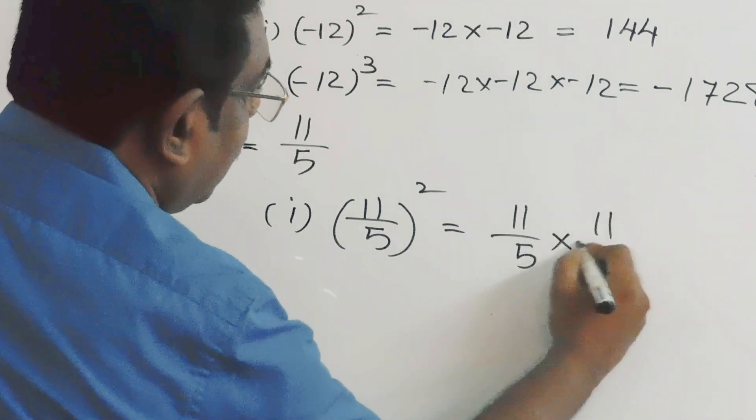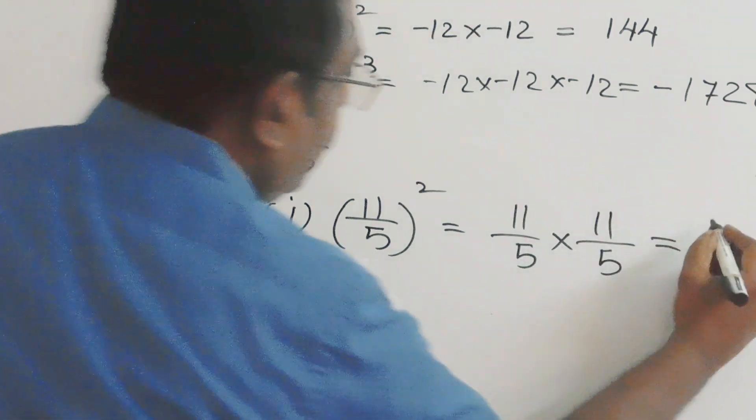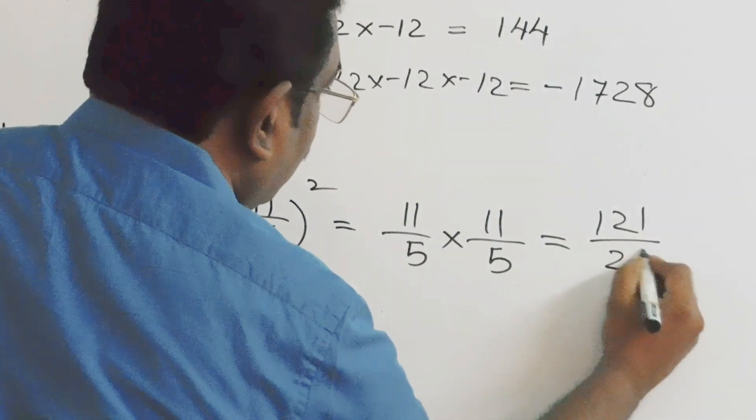Here, we will multiply 11 by 5 two times. 11 into 11 is 121, five times five is 25. So the square is 121 by 25.